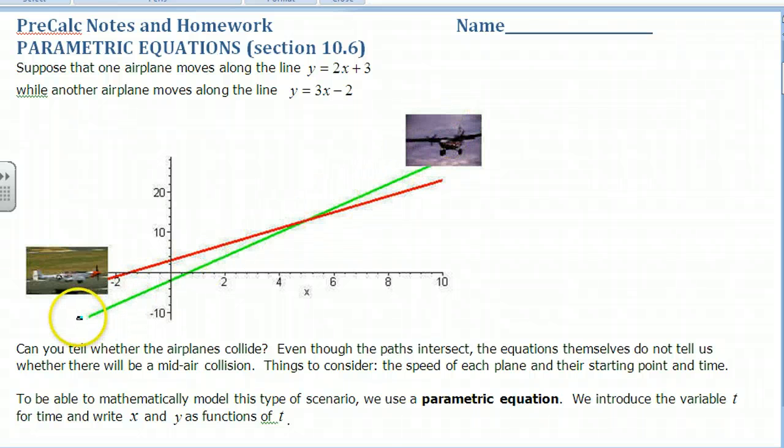Well it all depends if they are at this point at the same time. If this one comes in and lands, no problem. If this one takes off later, no problem at all. But if they reach this point at exactly the same time, then we're going to be in trouble. So parametric equations will tell us what their position is based on the time.